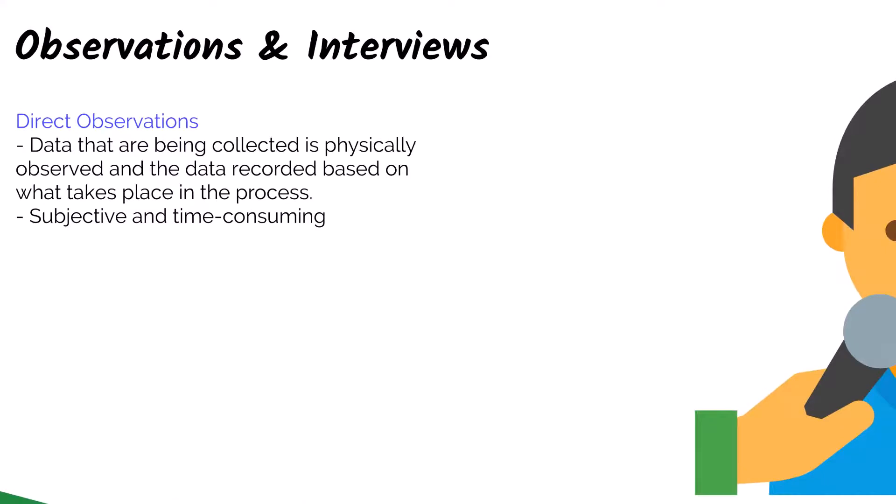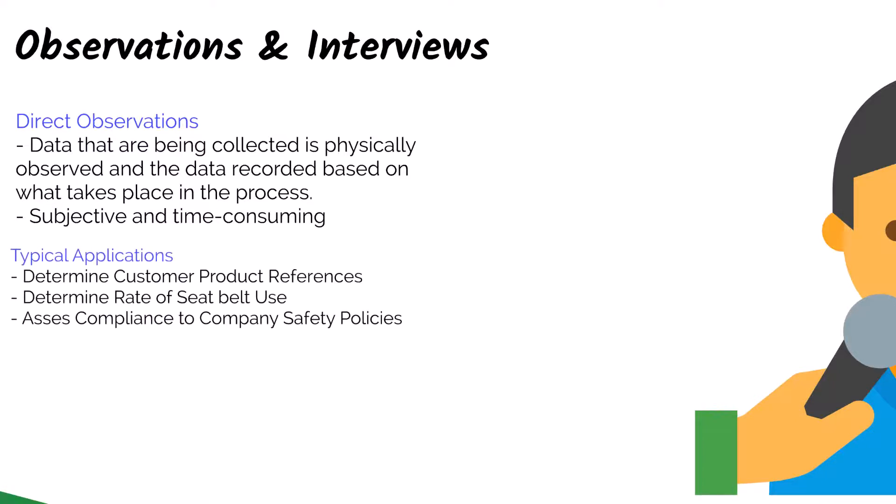With direct observations, the data collection process involves physical observation of the activity and recording what takes place. Personal observation can be very time-consuming, and you do get personal perception issues with this method, as different observers could see a situation in a different way. Some typical applications might be determining what customers like. Salespeople on the floor could observe what customers are trying on and purchasing versus putting back. You can also observe seatbelt usage, such as at a checkpoint. And then, within a company, it can also be used to assess compliance with company safety policies. For instance, if you work in a lab, you could do an inspection and observe to see if everyone is wearing their appropriate safety equipment, like lab coats and eyewear.